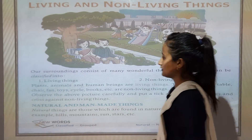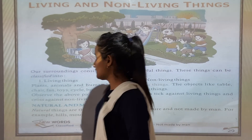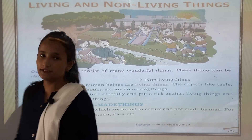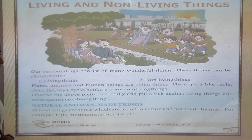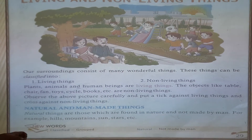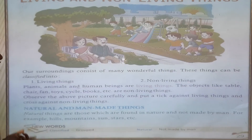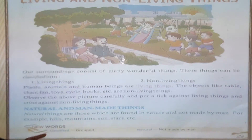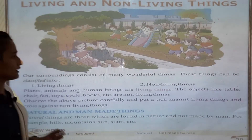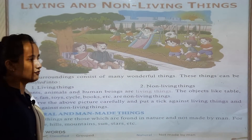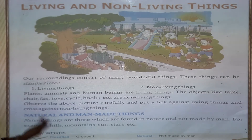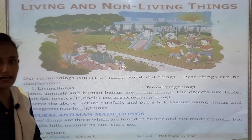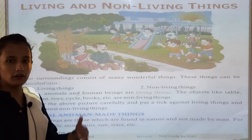Living and non-living things. Our surroundings consist of many wonderful things. These things can be classified into living things and non-living things. Our surroundings consist of wonderful things — there are so many things: animals, plants, non-living things.